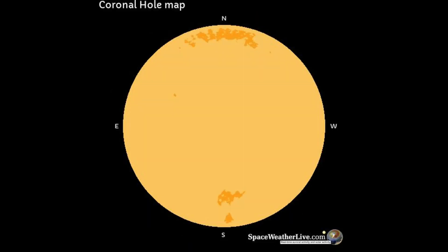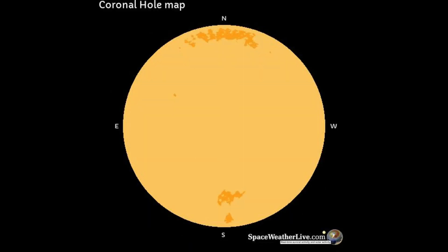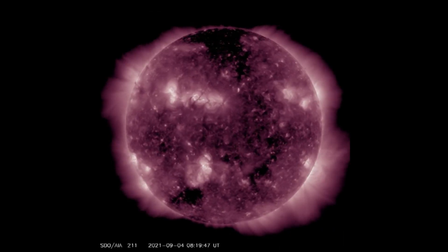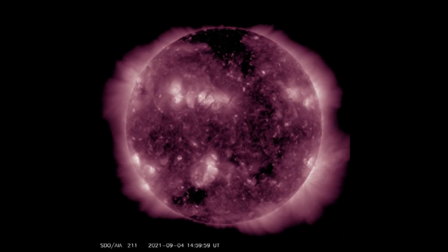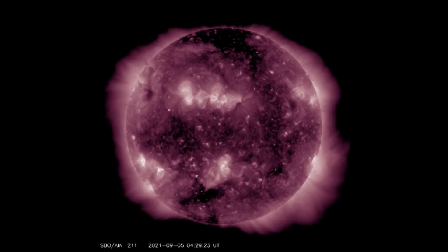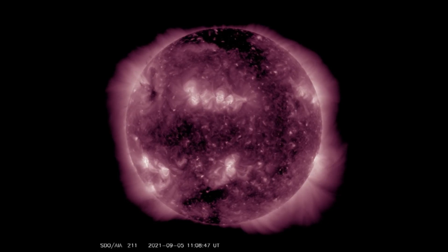This map shows the areas of the Sun where the coronal holes are located at this time. With the SDO 211 filter, the coronal holes can be seen on our rotating Sun.